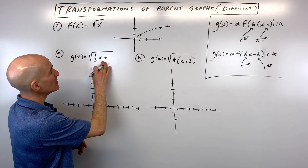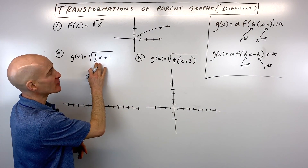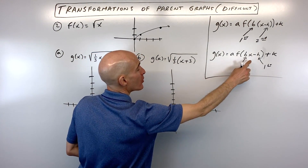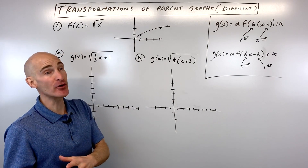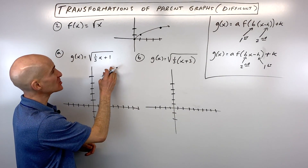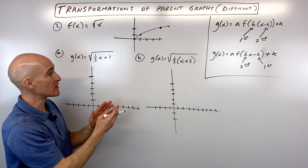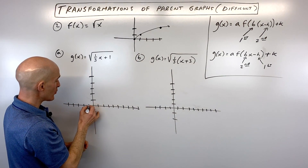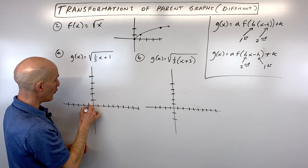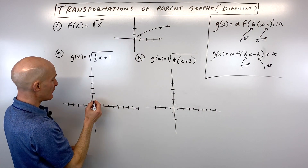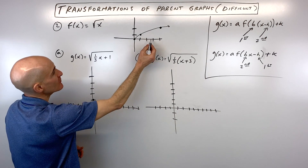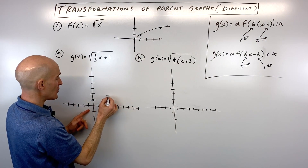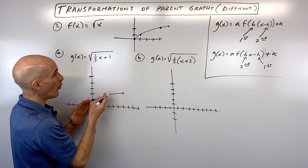For letter A, the b value is not factored out, so we're in the second form and we do the horizontal shift first. The plus 1 shifts all x-coordinates left 1: the starting point moves from (0, 0) to (−1, 0); a point that was at (4, 2) moves to (3, 2). Everything shifts left 1.